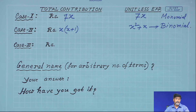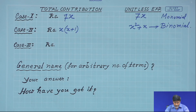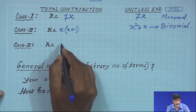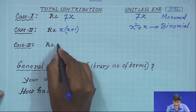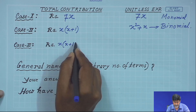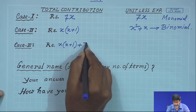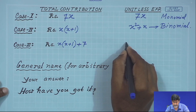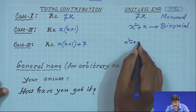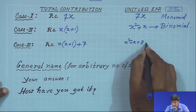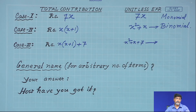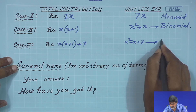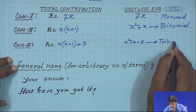Now, I did not give any contribution to your fund, but I am ready to contribute rupees 7. Then what will be the total contribution? It will be x(x+1) plus 7, and after simplifying we get x squared plus x plus 7. The total number of terms here is 3, so we can give the name trinomial — tri for 3.